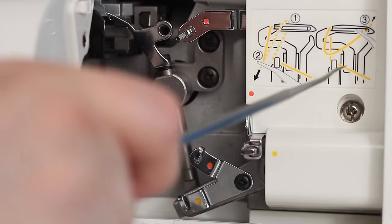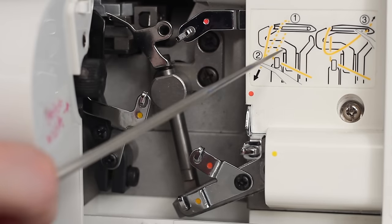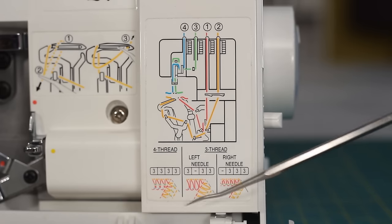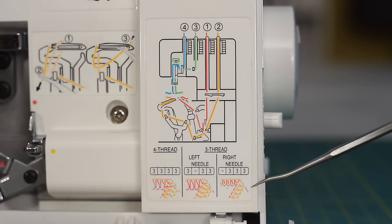Over here is another diagram to help you thread the lower looper, which is the most complicated part of this entire process. Down here, you have another graphic showing the standard tension settings in a 4-thread and 3-thread overlock.